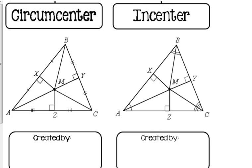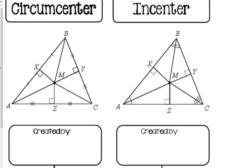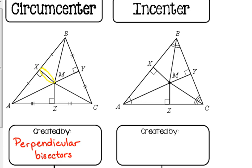The circumcenter is created by what we call the perpendicular bisectors. One thing I do like about geometry is that the names are very descriptive. Perpendicular bisectors means that these segments are perpendicular to the sides of the triangle, and they bisect — meaning they cut the sides in half. You will see on the diagram here: XM is the perpendicular bisector of side AB. Point X is halfway along side AB, cutting it into two equal pieces, and it's perpendicular to that side as well.